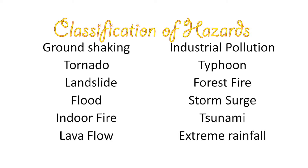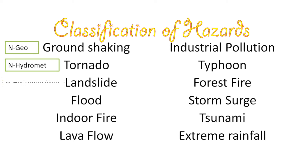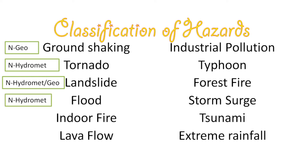Now let's go back to our classification activity. Ground shaking basically happens on land, so this is a natural hazard under geological hazard. Tornado is a natural hydro-meteorological hazard. Landslide can be classified as hydro-meteorological hazard and also as geological hazard, because landslides happen on land and are often caused by too much rainfall.